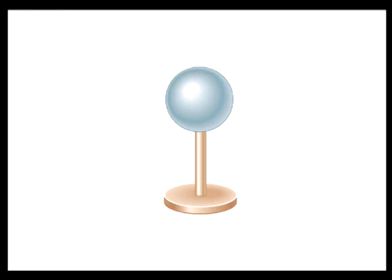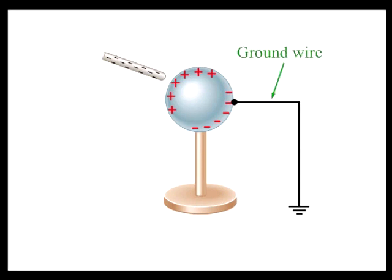Now, let's again bring the charged rod near the surface of the sphere. Under most conditions, the Earth is a good electrical conductor. So when a metal ground wire is connected between the sphere and the ground, some of the free electrons leave the sphere and enter the Earth.